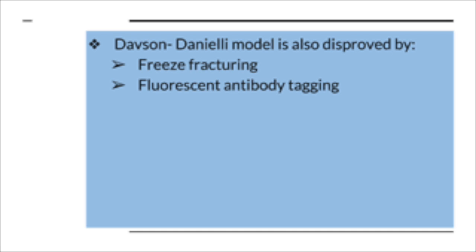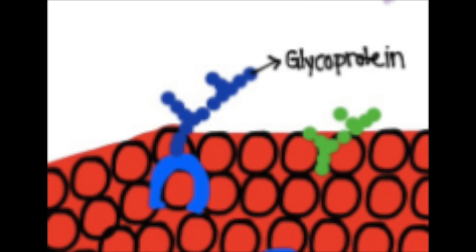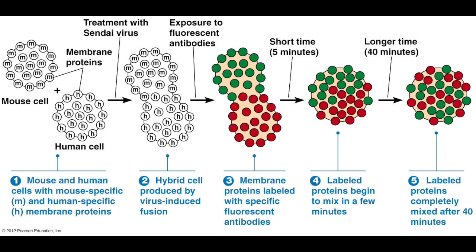The Davson-Danielli model was also disproved by fluorescent antibody tagging. Fluorescent antibody tagging uses red and green markers attached to antibodies, such as glycoproteins, which then bind to membrane proteins seen in the model. When cells fuse together, the markers mix within the membrane of the cell, showing that membrane proteins are mobile rather than fixed.